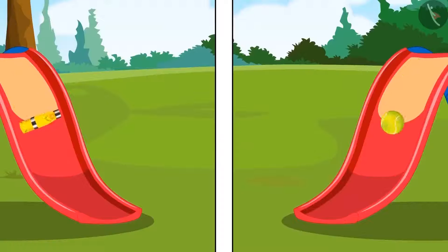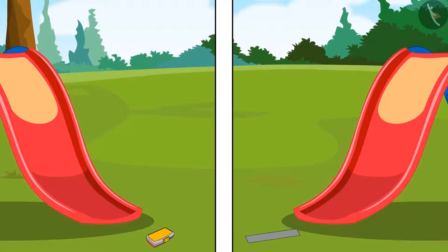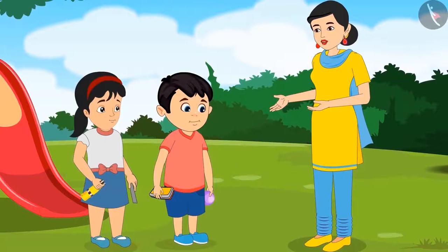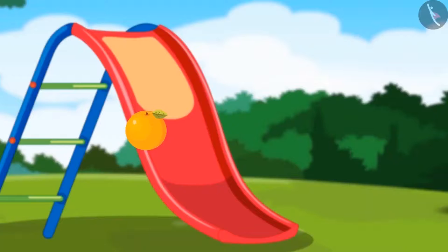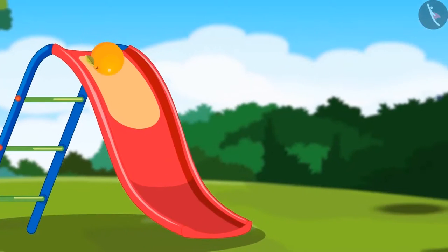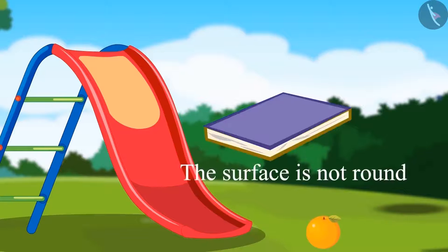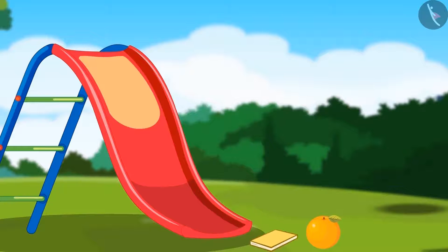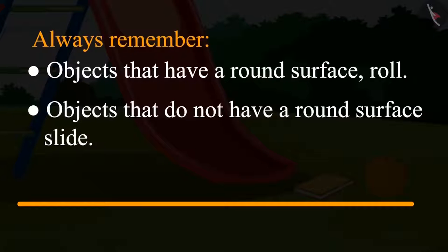Chotu concludes: 'All round objects roll and the rest of the objects slide down.' The mother confirms: objects that have a round surface roll — just like an orange, which is round, so it will roll. And if the surface is not round, like a notebook, then it will slide. Objects whose surface is round roll, and objects whose surface is not round slide.